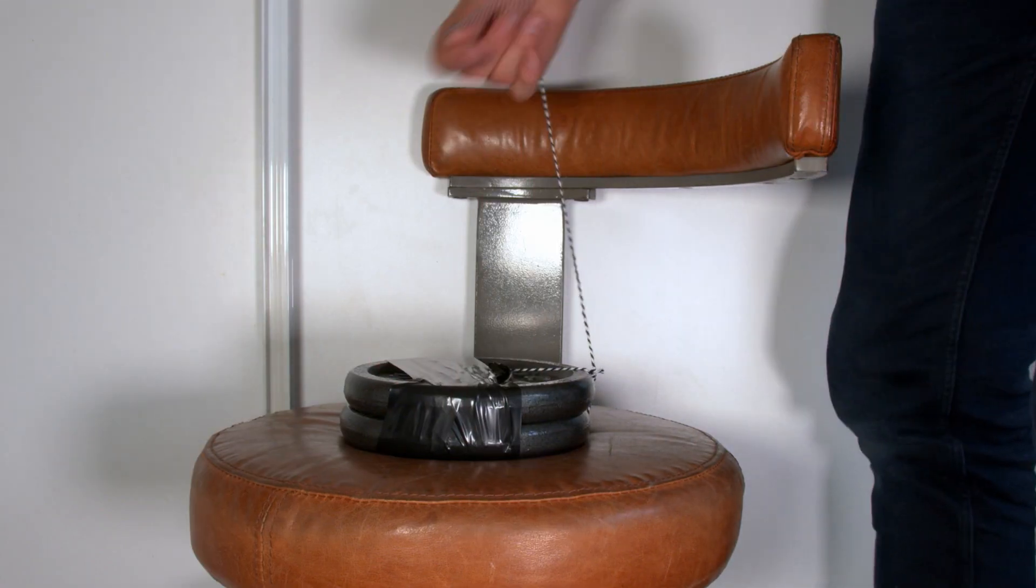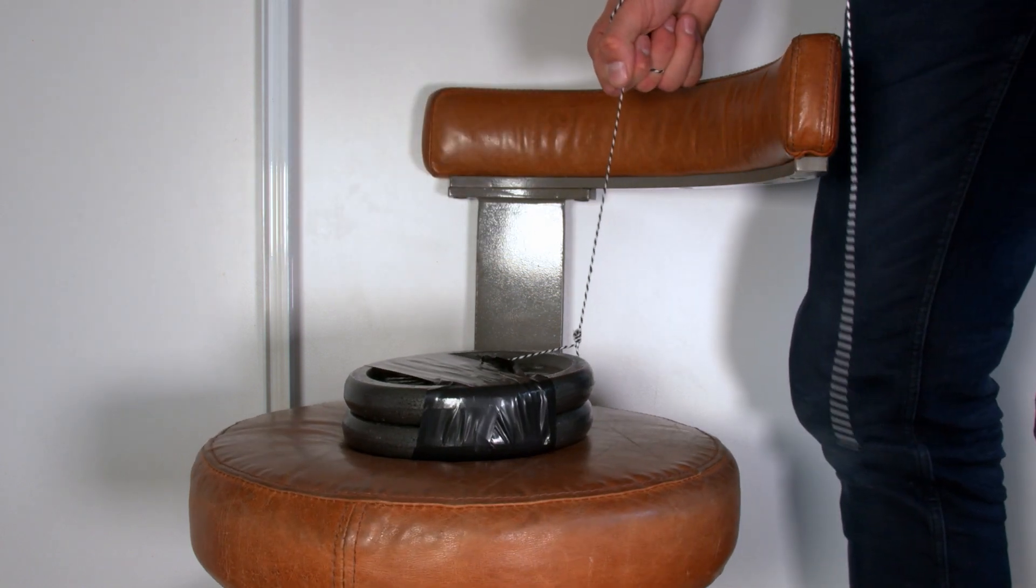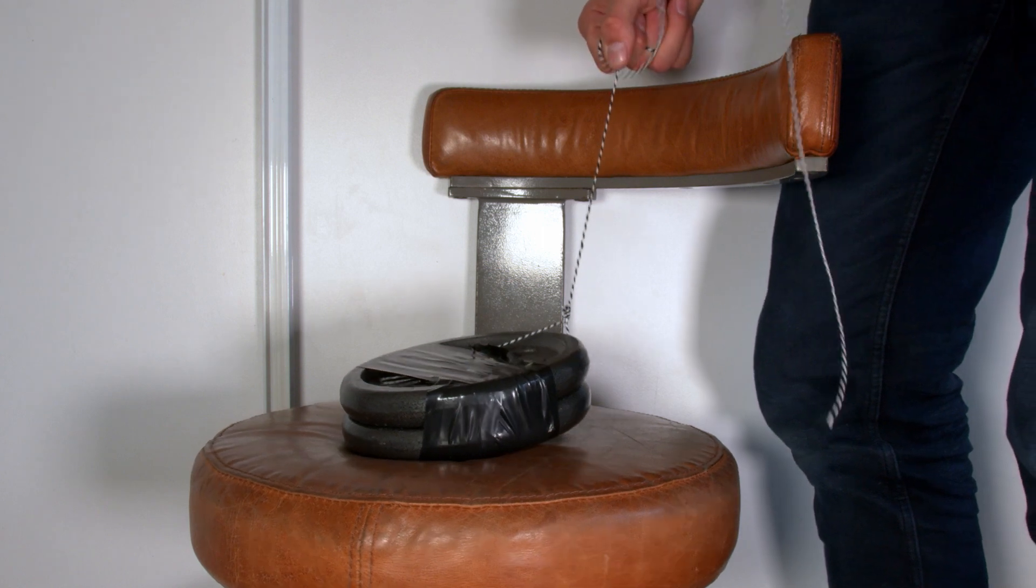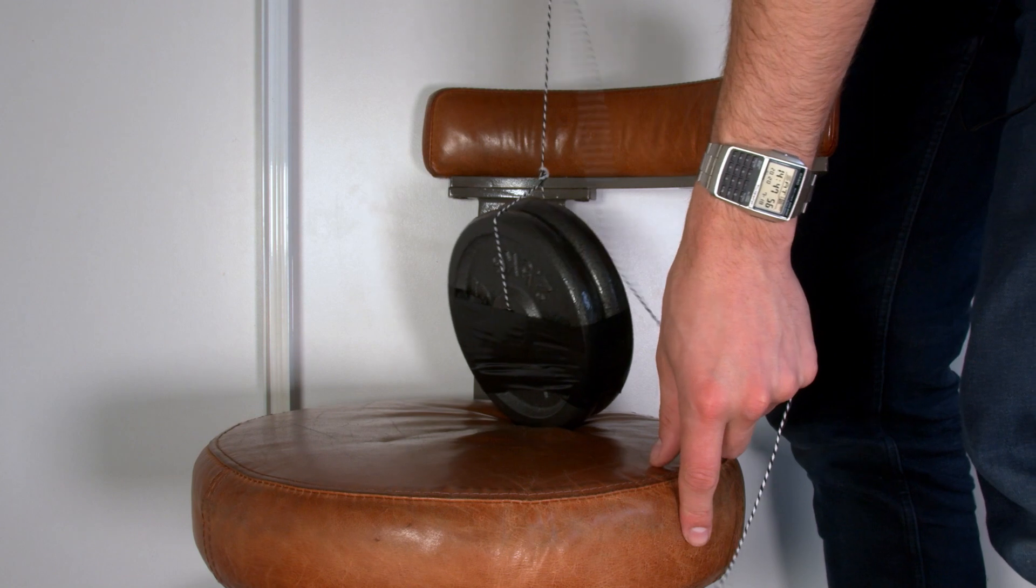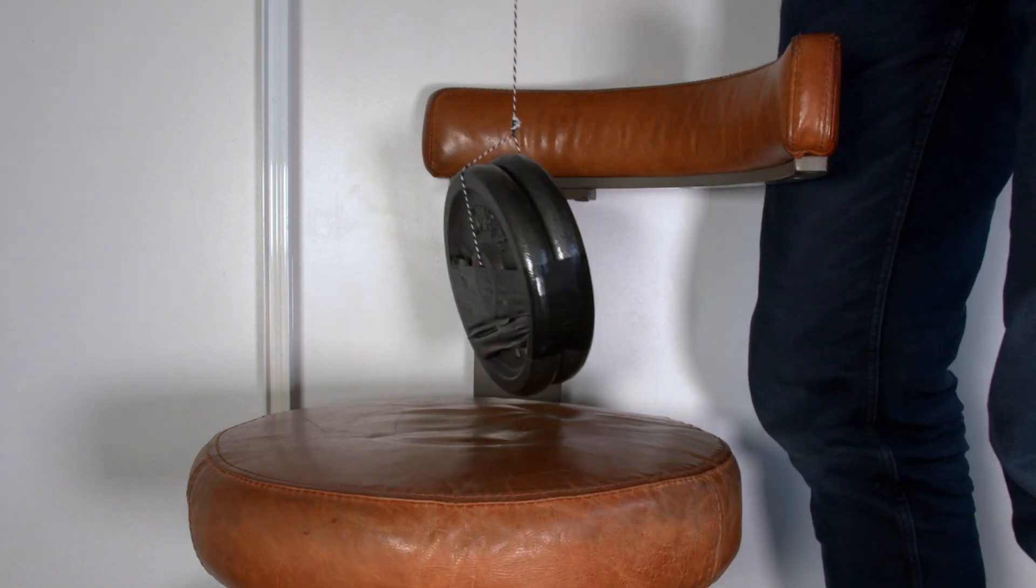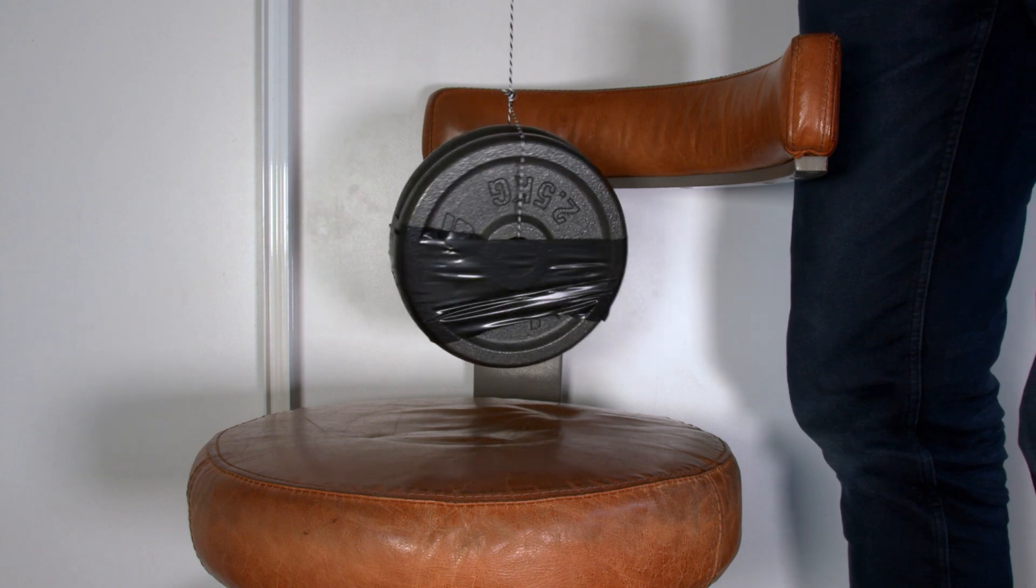So to demonstrate this, I have some of the same string I used to make the table there. But the thing about string, like string and rope, all that kind of stuff, is it has a high tensile strength. So I have a five kilo weight here, and as you can see, just by the string I can pick up that five kilo weight.